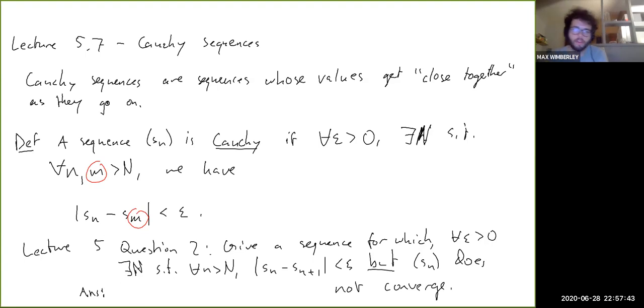But the one that I had in mind was something like S1 equals 1, S2 equals 1 plus 1 half, S3 equals 1 plus 1 half plus 1 third, and so on. This is called the harmonic series. Right. So these diverge.